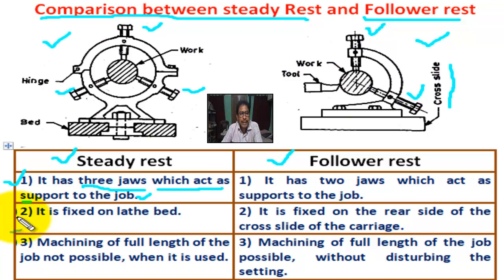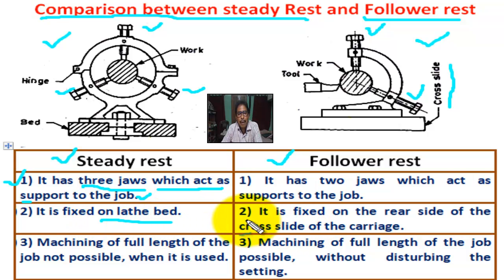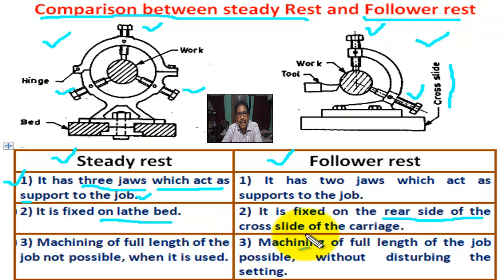Number two for steady rest: it is fixed on the lathe bed. Number two for follower rest: it is fixed on the rear side of the cross slide of the carriage.